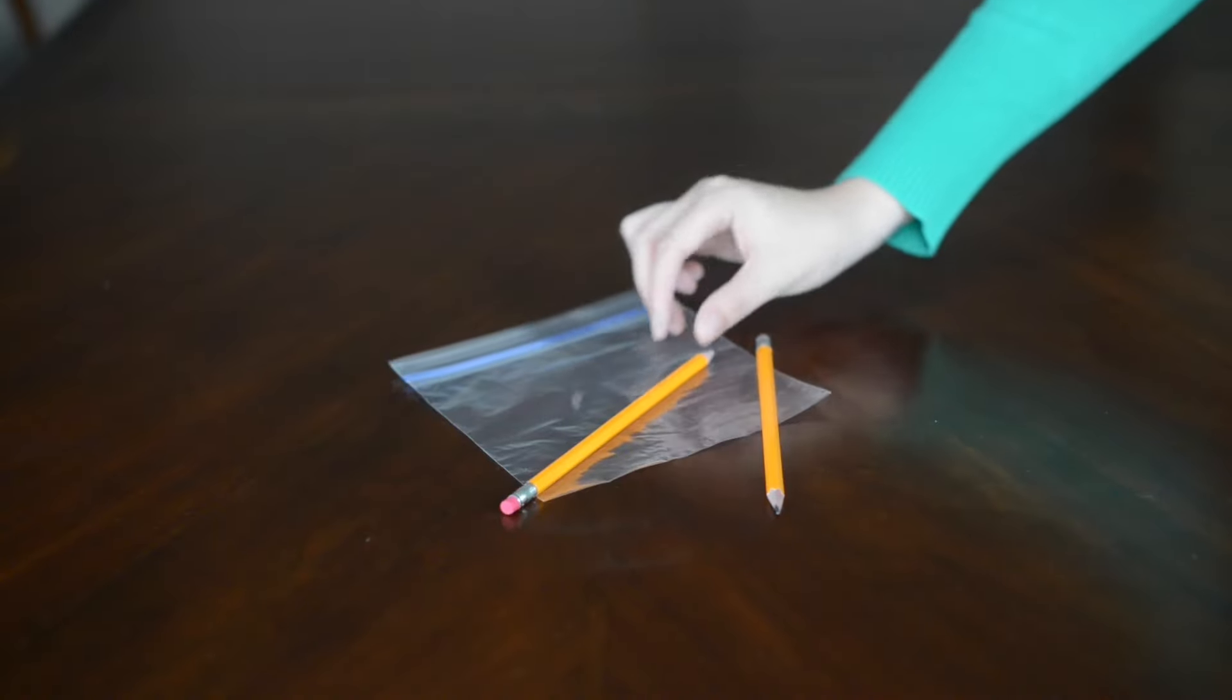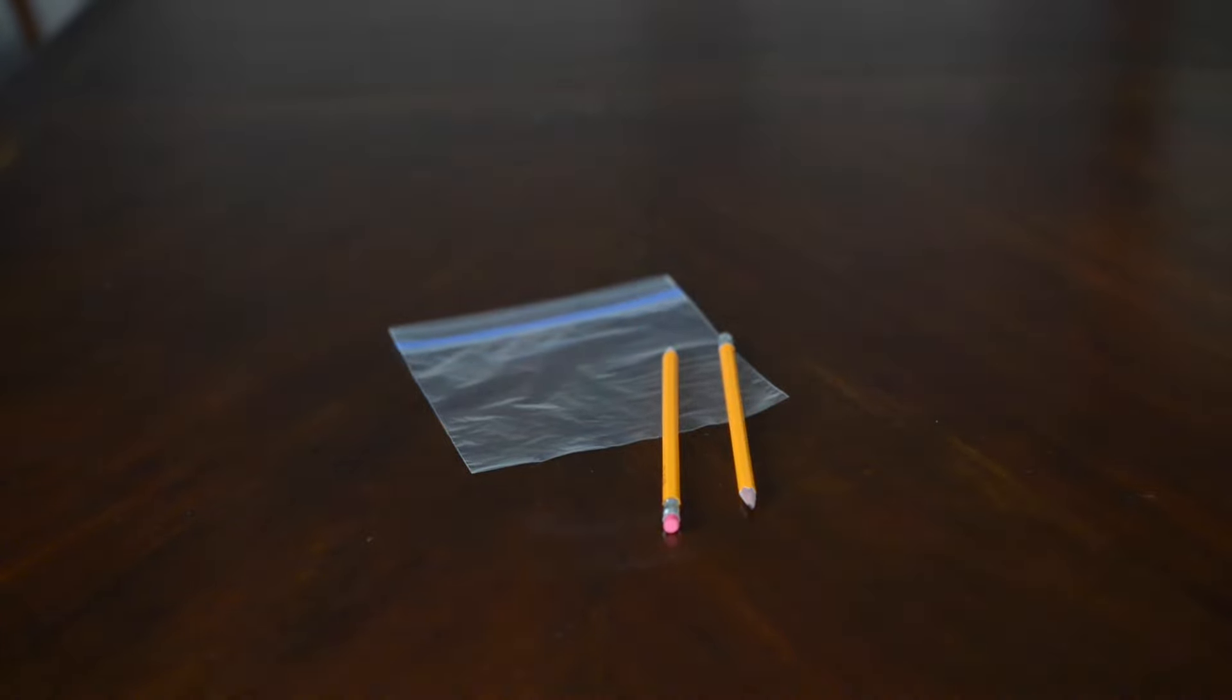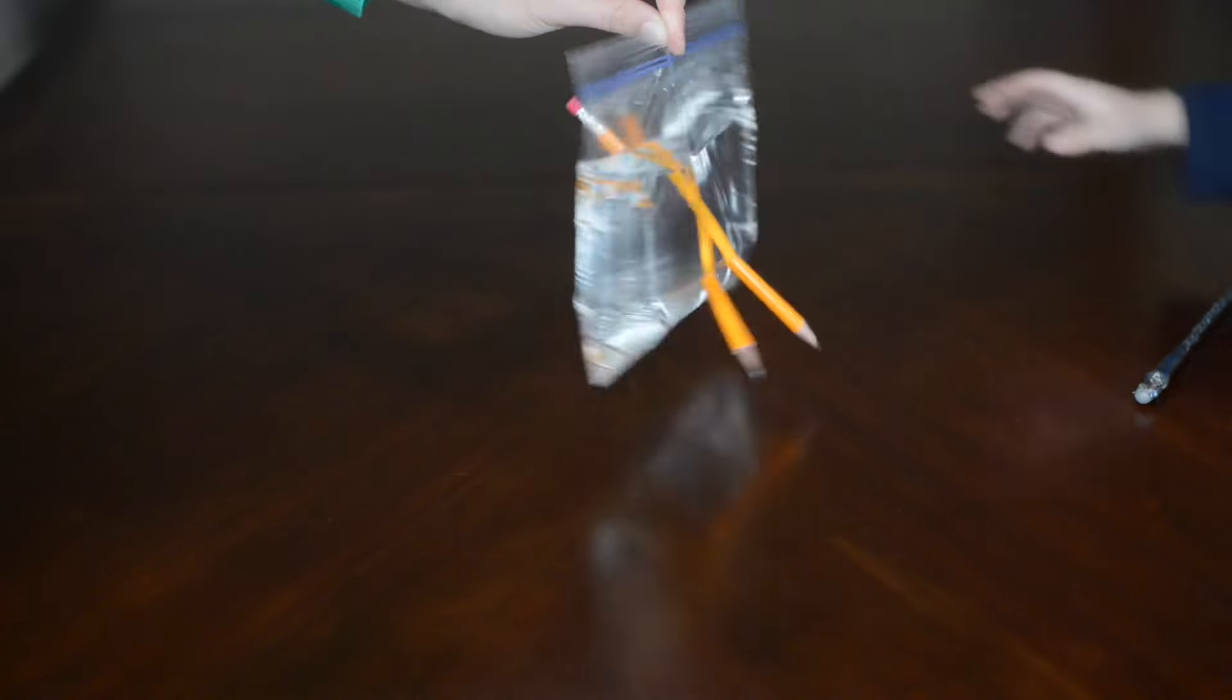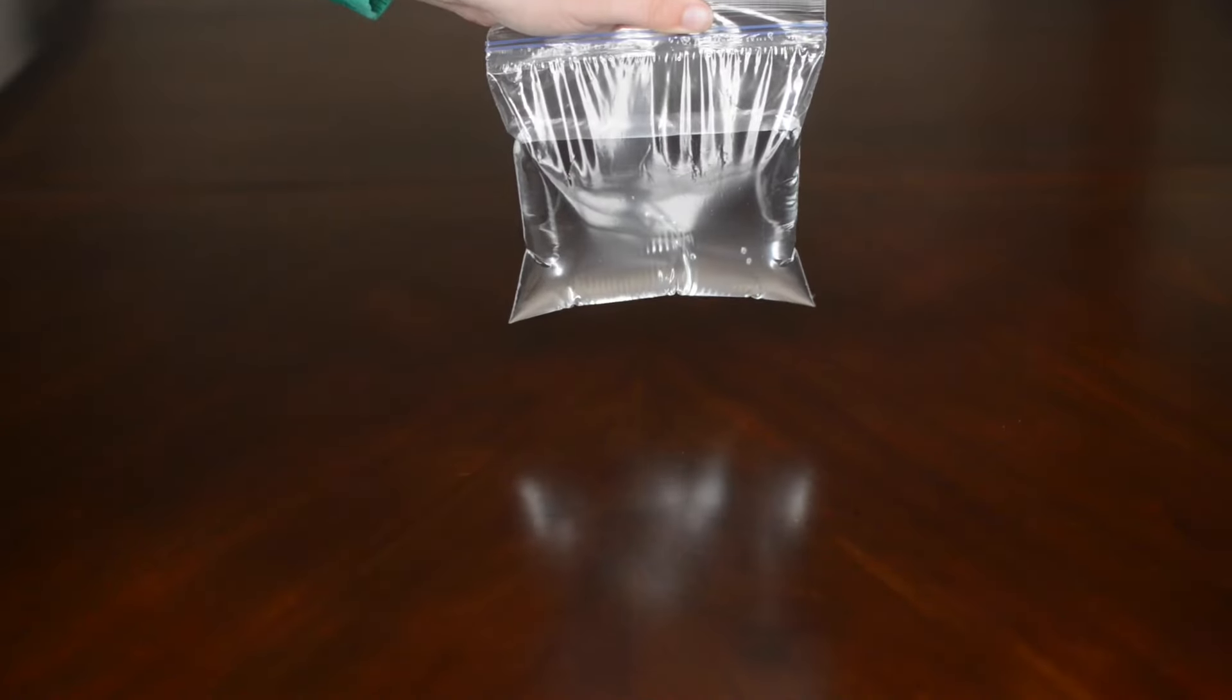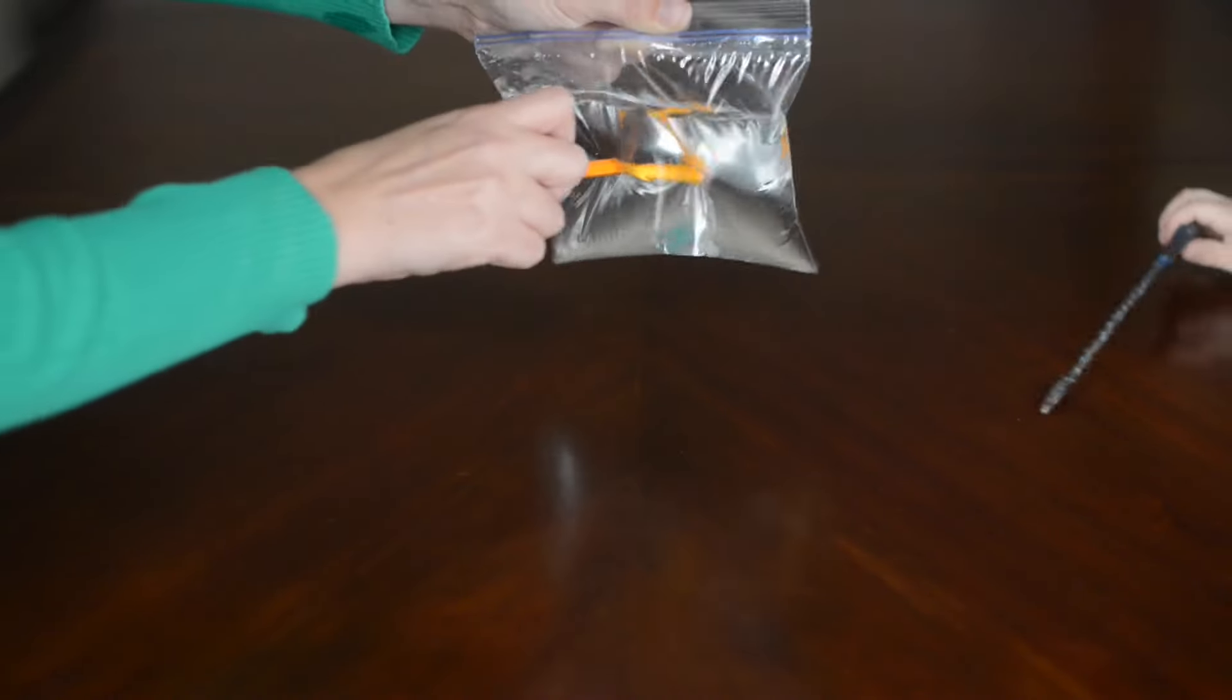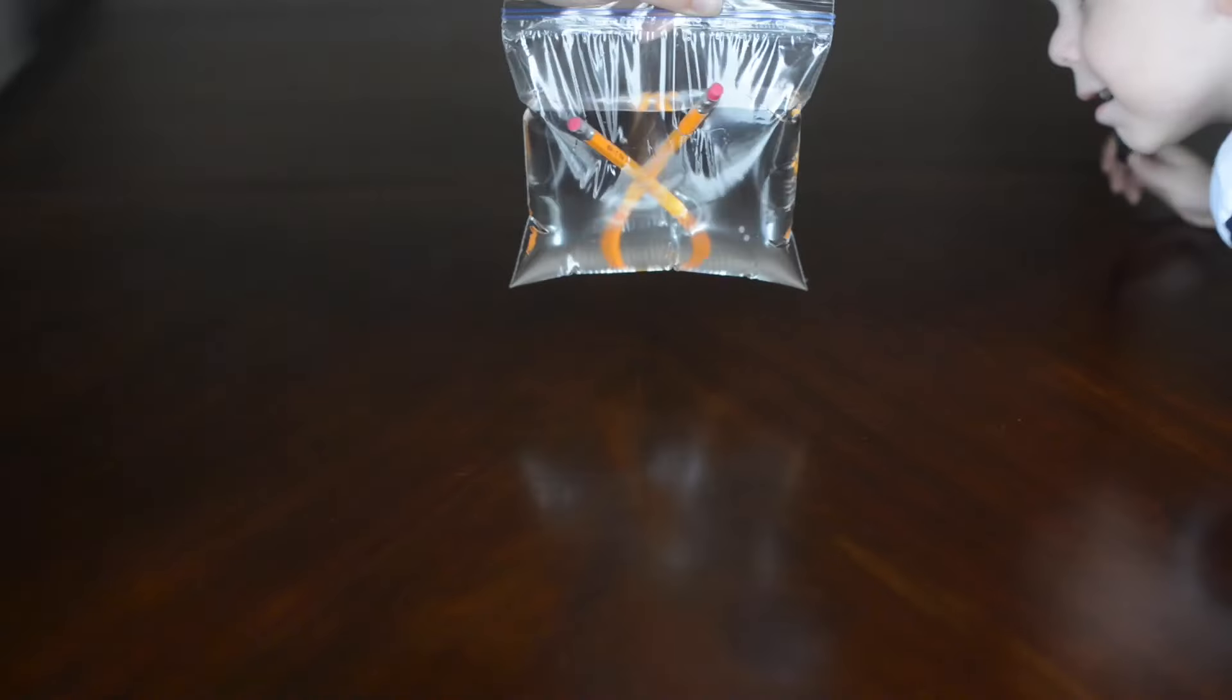What you'll need is a couple pencils and a plastic bag, and of course some water. How does this work? Well, the plastic bag is made of polymers, and polymers are a long chain of molecules. But when you poke through the plastic, you're stabbing between the long strands of molecules, which creates an airtight seal around the pencil, keeping all the water inside.